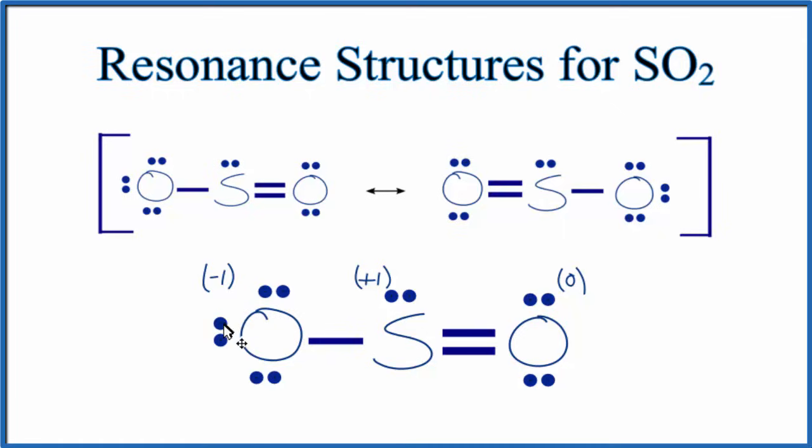And we'll do that by moving this pair of electrons to the center. So let's make this a double bond. So now all of the formal charges are zero. And this is a really good Lewis structure for SO2. Our rules and our theory say this is the best Lewis structure for SO2.